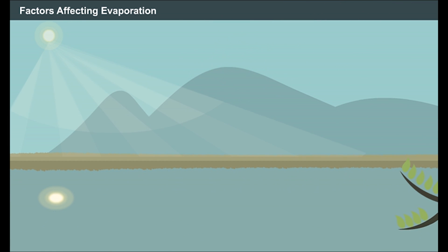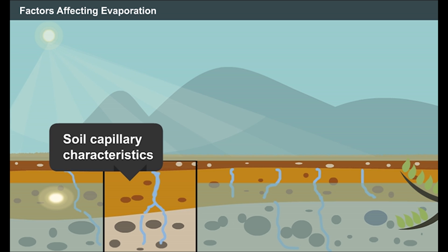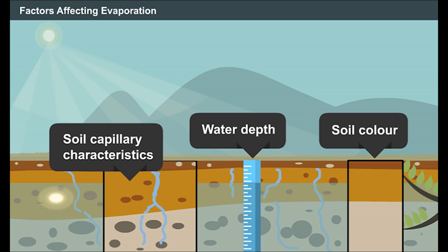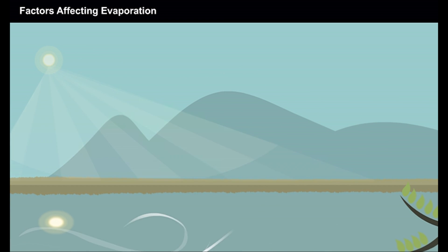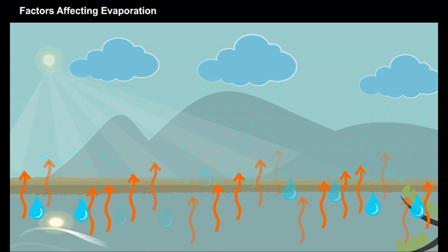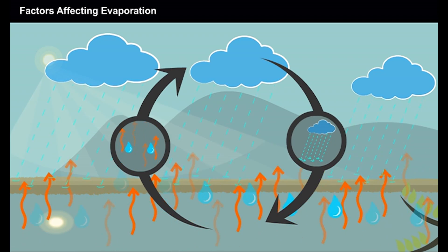Apart from other factors, soil characteristics such as soil capillary characteristics, water depth, soil colour also influences the evaporation rate. Thus, by learning the factors that influence the evaporation of an area, you can analyse the environmental changes that are closely associated with the evaporation process.